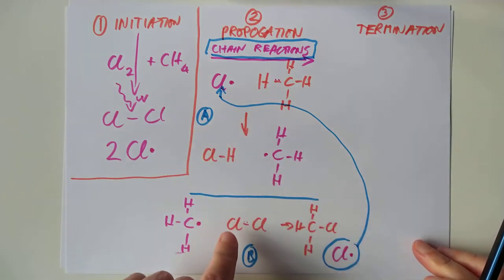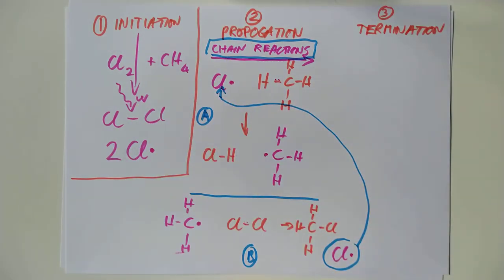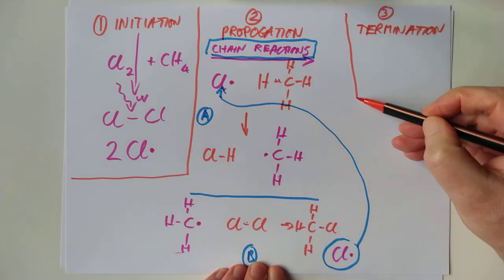This methyl radical runs around looking for something to bash into and to solve its unpaired electron problem. And it comes across unsplit molecules of chlorine. This mugs the chlorine molecule. It steals this chlorine and one of its electrons. So you end up making chloromethane and a chlorine radical. That's why these are called chain reactions. Because they self-propagate.